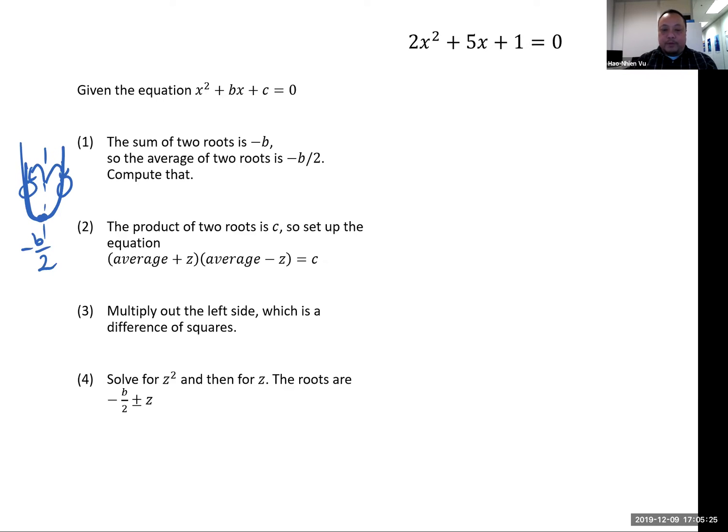We have 2x squared plus 5x plus 1 equals 0. Last time I gave this first step as given the equation x squared plus bx plus c. Well, we're not given the equation with a equals 1. We are given an equation with a not equal to 1, a equals 2. So we're going to have to divide by a to make it that way. So I'm going to change the first step. I'm going to call it step 0.